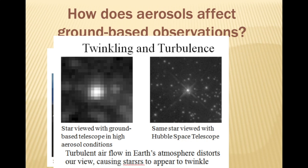Why does twinkling and turbulence occur? When a star is viewed from a ground-based telescope under high aerosol conditions, it looks blurry because many aerosols decrease the clarity — the resolution — of the star's image. When we put the same telescope in space, there is nothing obstructing, so the same star viewed with the Hubble telescope is much clearer. This means turbulent airflow in the Earth's atmosphere distorts our view, causing stars to appear to twinkle.